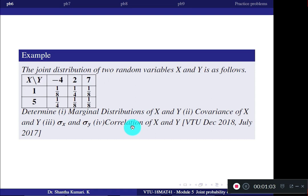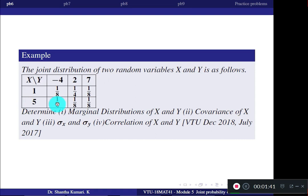Let us find the answers one after the other. First question: marginal distributions of X and Y. For X equal to 1, we add all the values in that row. Adding all entries in front of X equal to 1 gives you P(X=1), the individual probability. Similarly, adding the entries in front of X equal to 5 gives you P(X=5). These are the marginal densities of X.